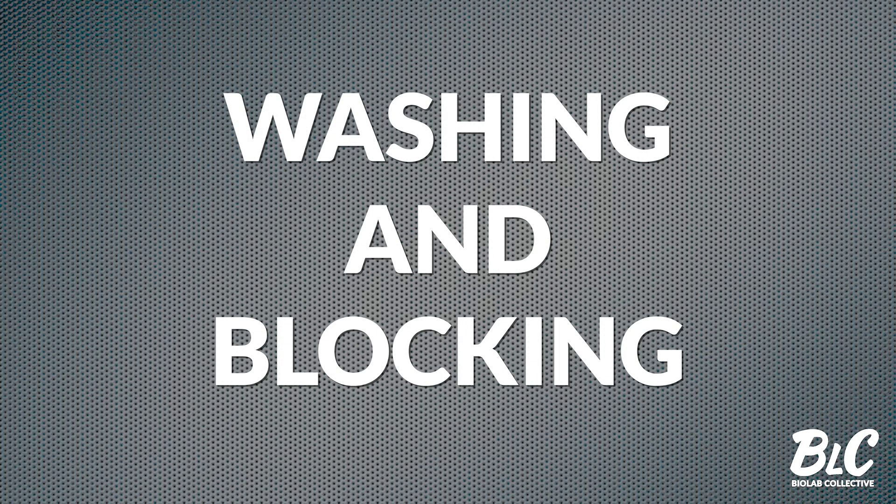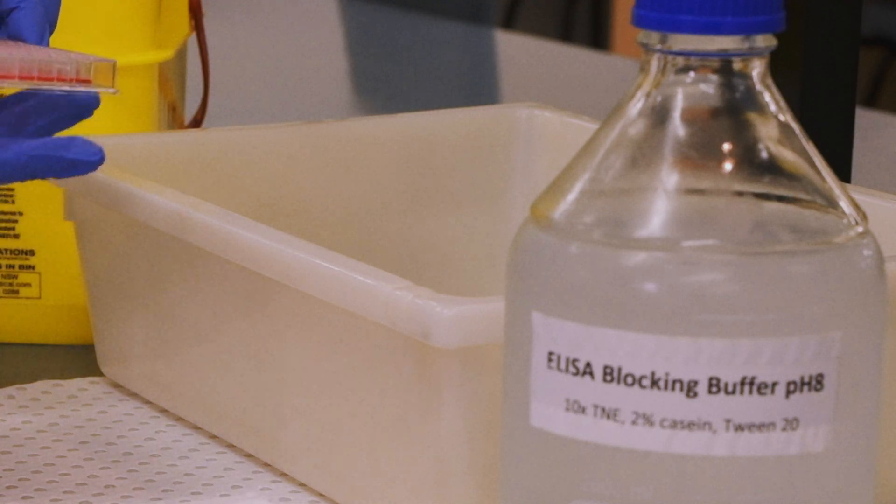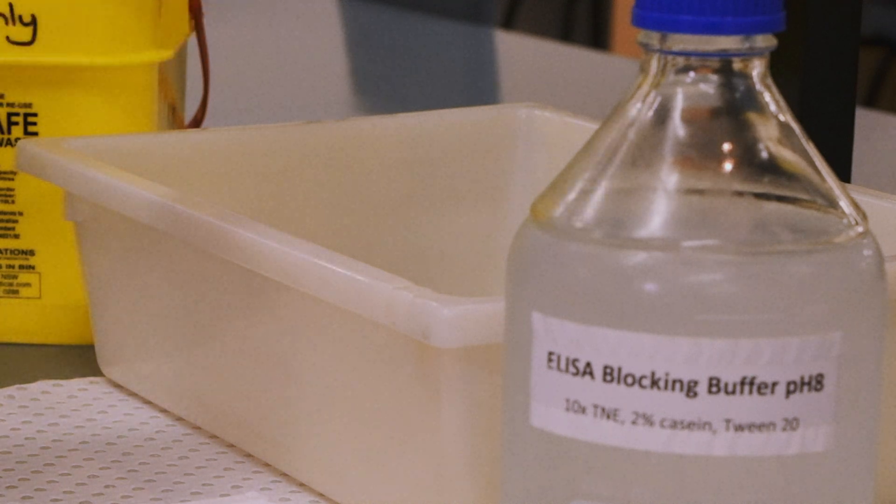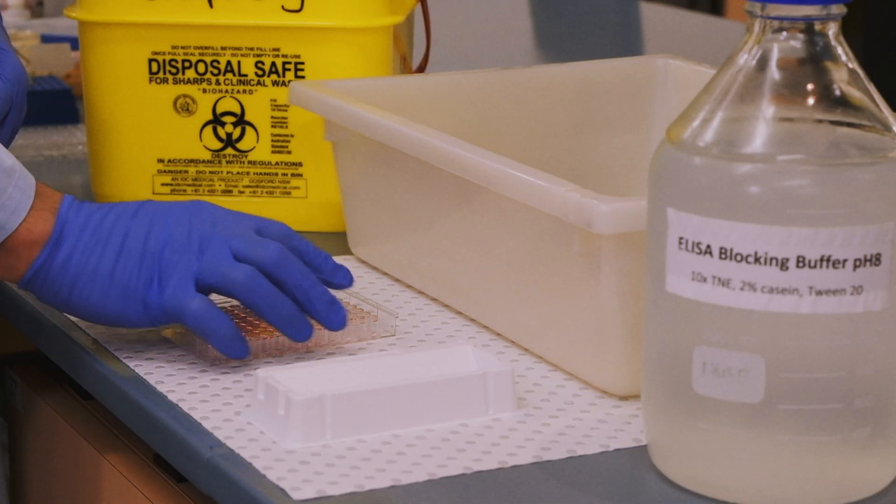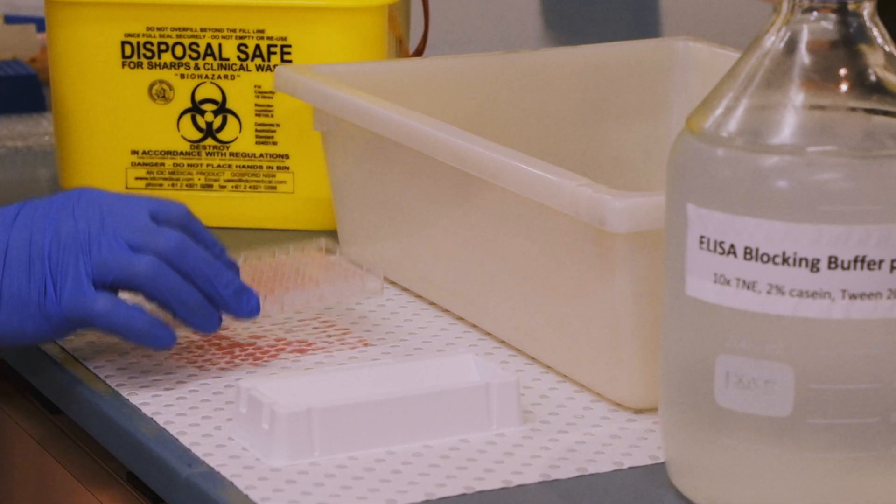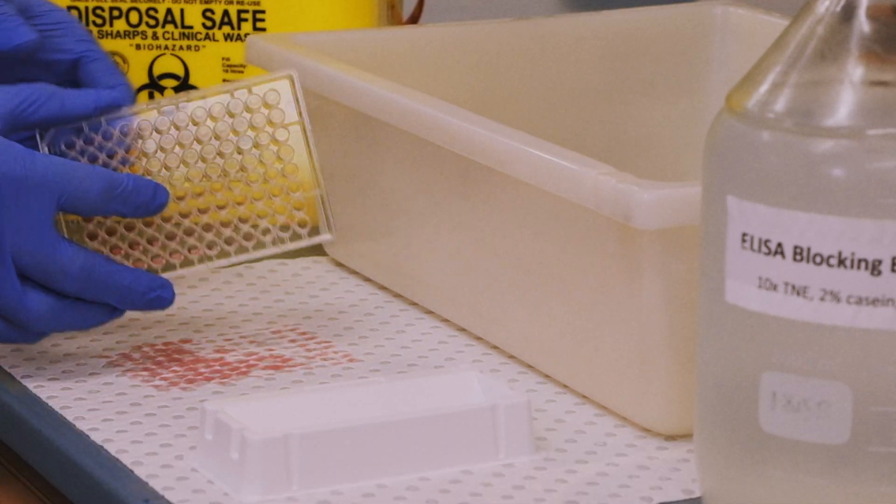The antigen is now bound to the plate, however there is also unbound antigen and coating buffer still present. Simply flick the plate upside down into the waste container to remove the liquid in the plate and tap the plate a few times on the absorbent mat to remove any residual liquid.